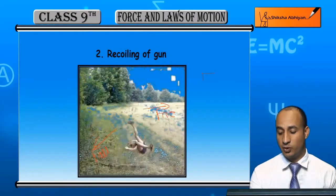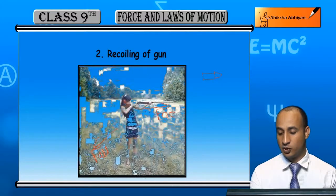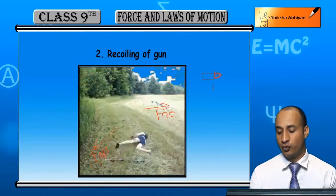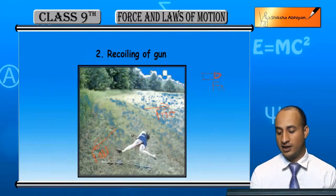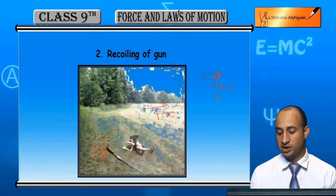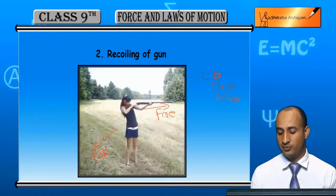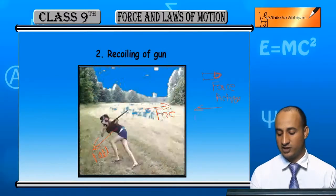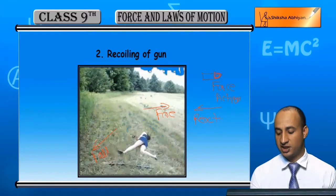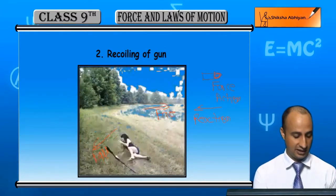Kyunki jab uski bullet aage ki taraf gayi — this is the bullet going forward — toh force aage ki taraf laga. Yeh hamara action hua. Ab same force peeche ki taraf reaction hua, aur us reaction ki wajah se wo girl gir jaati hai.